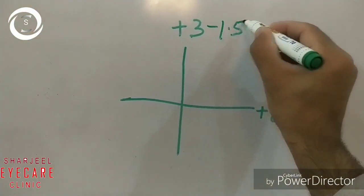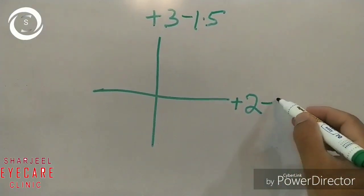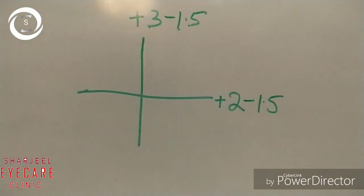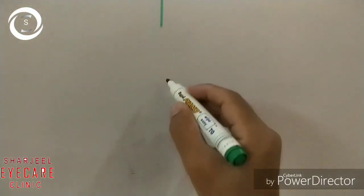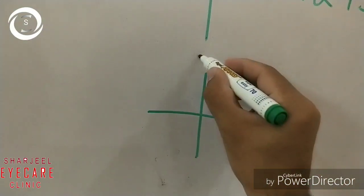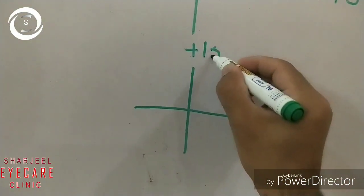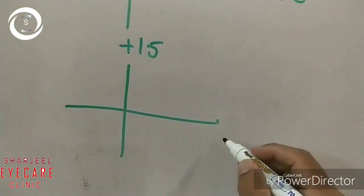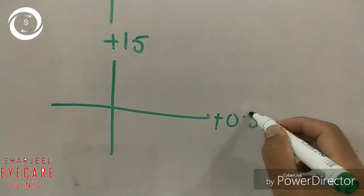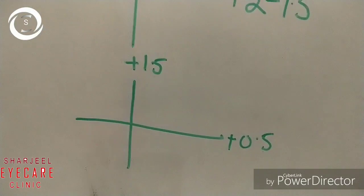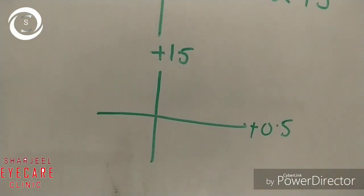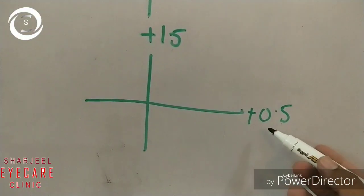From plus three minus 1.5, from plus two minus 1.5, so it will become plus 1.5 vertically, plus 0.5 diopter horizontal. Now you have subtracted the working distance. If you have given cycloplegics, you can also remove it at the start.